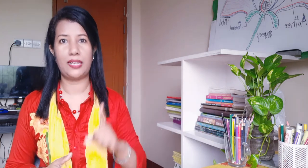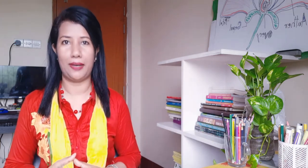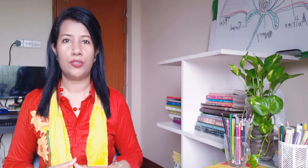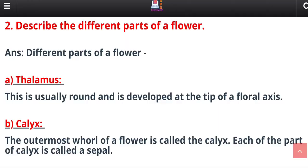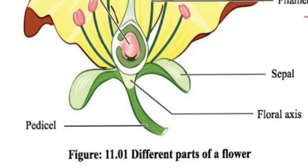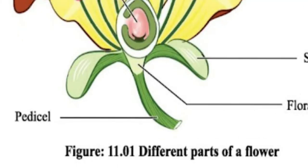A flower has five main parts. Number one is the thalamus, which is usually round-shaped and it develops at the tip of the floral axis. The pedicel is the flower stalk.